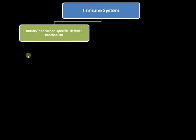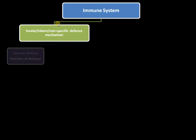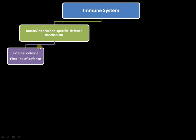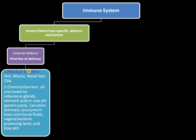The immune system can be broadly classified into innate and acquired immunity. Innate or inborn immunity is a non-specific defense mechanism — a genetic defense mechanism that we are born with. The immune system is undoubtedly the most efficient system, acting like a military system that protects our body from invaders.